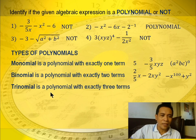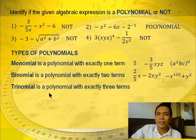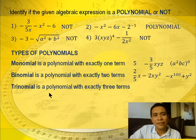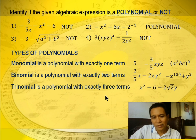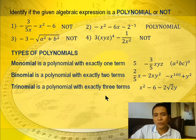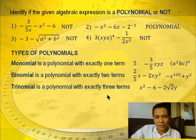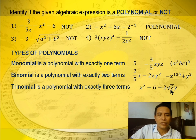Next is trinomial — a polynomial with exactly three terms. Example: x squared minus 6 minus 2 times the square root of 2 times y. Counting the terms: 1, 2, 3 — three terms, so that's a trinomial.